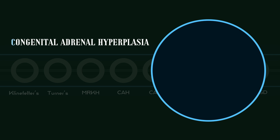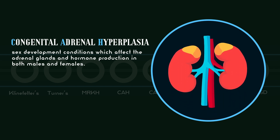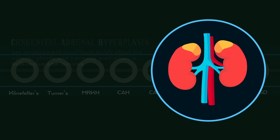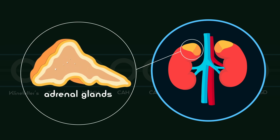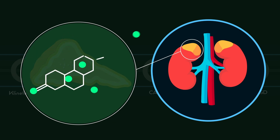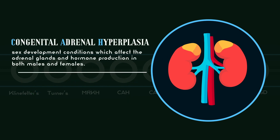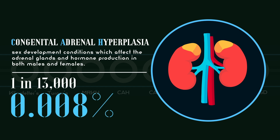Congenital adrenal hyperplasia, or CAH, is a group of sex development conditions which affect the adrenal glands and hormone production in both males and females. Adrenal glands are located on the top of the kidneys and produce hormones which regulate essential functions in the body. CAH occurs when genetic mutations cause the adrenal glands to produce excess male sex hormones known as androgens. The condition affects about 1 in 13,000 newborns, a rate of around 0.008% of births.